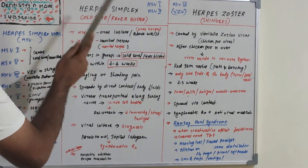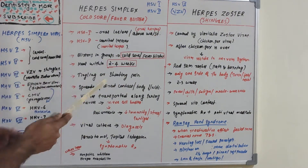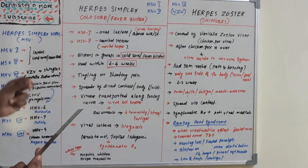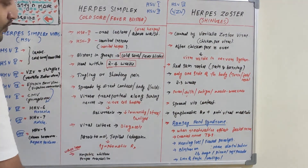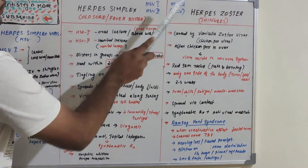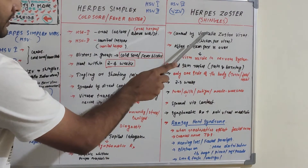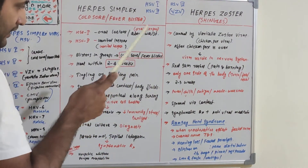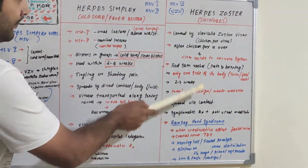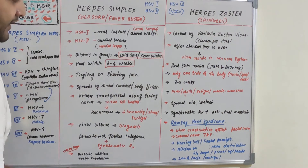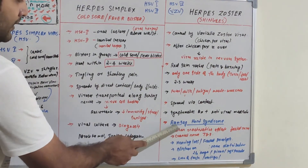Herpes simplex is also known as cold sore or fever blister, while herpes zoster is caused by the third-category varicella zoster virus, reactivating from latency in the nervous system. There is one more very important syndrome: Ramsay-Hunt syndrome, which occurs in herpes zoster. When herpes zoster reactivates and affects cranial nerves 7 and 8 — the facial nerve and auditory nerve — blisters form along the nerve pathway, and this is known as Ramsay-Hunt syndrome.